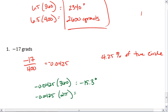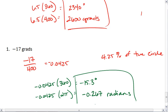Multiply by 2 pi and we get negative 0.267 radians. Those are the same as negative 17 grads.